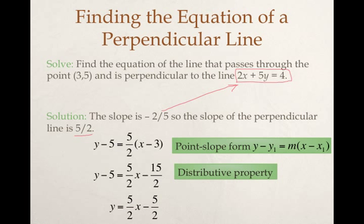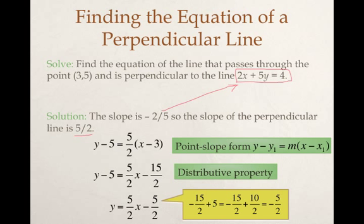Now I need to add 5 to both sides. And again, I'll show you how the fraction math works. I change my number 5 here. I change 5 to a fraction with 2 in the denominator, which is just going to be 10 over 2. So I have negative 15 plus 10 gives me negative 5, and I keep my denominator of 2.